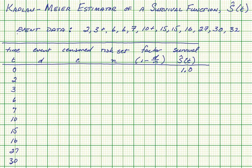Here's how to calculate a Kaplan-Meier estimator or survival function. We'll start with a set of event data listed in sorted order, increasing times, and include the censored observations — the ones with the plus signs.